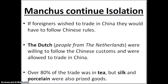The Manchus continue isolation. If foreigners wished to trade in China, they would have to follow Chinese rules. The Dutch, which are the people from the Netherlands, were willing to follow the Chinese customs, so the Chinese welcomed the Dutch to trade in China. Over 80% of the trade was in tea, but silk and porcelain were also prized goods.